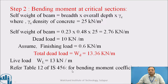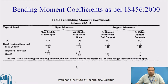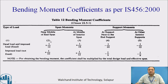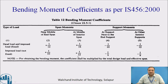Referring to Table 12 of IS456 for bending moment coefficients. This table provides bending moment coefficients for dead load and live load types of loads. We get span moments — near middle of end span and at middle of interior span — with corresponding coefficients. For support moments, at the support next to the end support we have coefficients with a negative sign indicating hogging moment, and positive sign indicates sagging moment. At other interior supports, we again have negative moments.